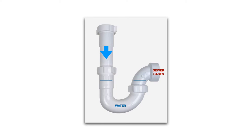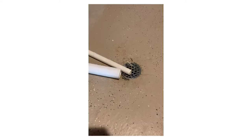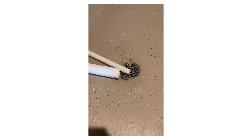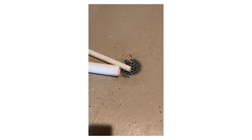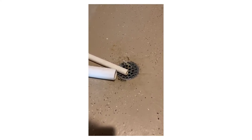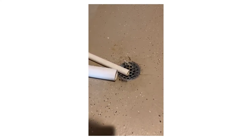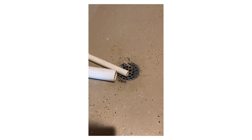That P-trap needs to stay full of water, and that keeps sewer gases from entering into your building. I just want to do a quick video about floor drains — sometimes they're called floor sinks.